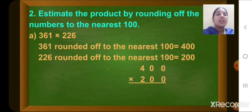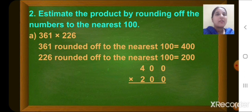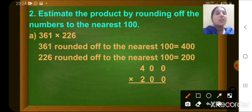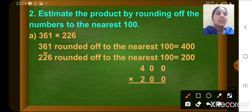Question number 2: estimate the product by rounding off the numbers to nearest 100. In question number 1 you rounded off to nearest 10. In question number 2 you have to estimate the product by rounding off to nearest 100. Question number A is 361 multiplied by 226. First, for the multiplicand 361, we look at the digit at the tens place, which is 6, more than 5. So the round off of 361 will be 400.